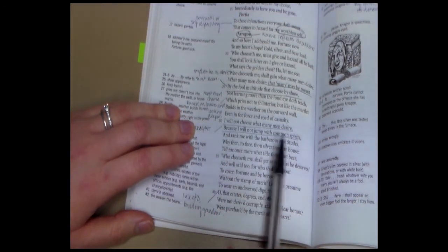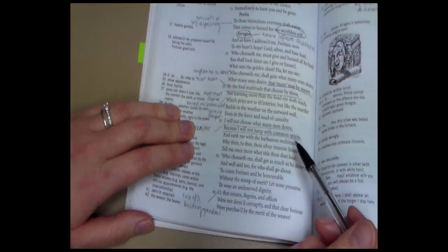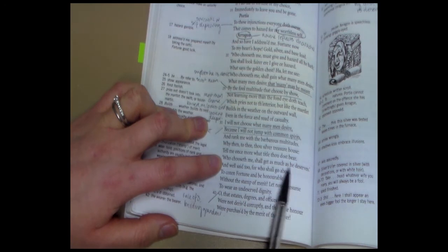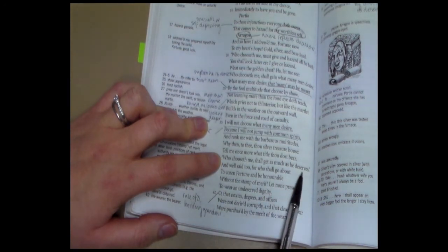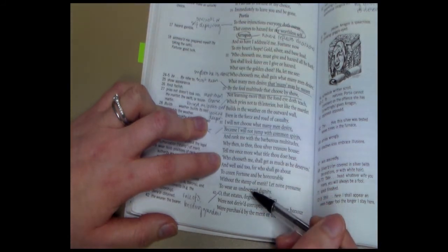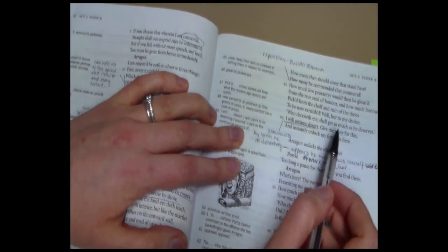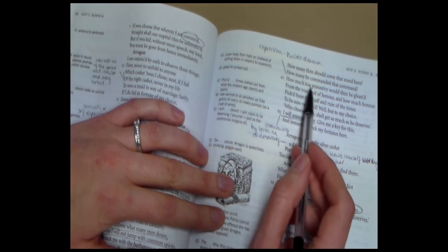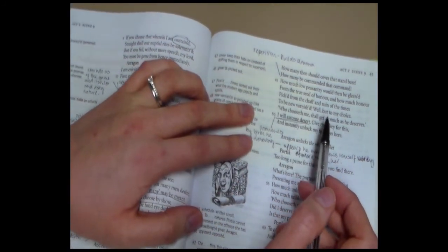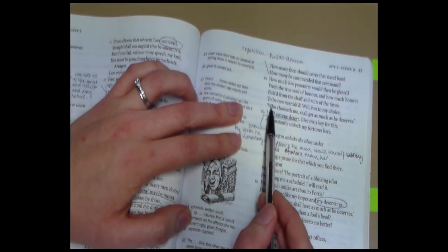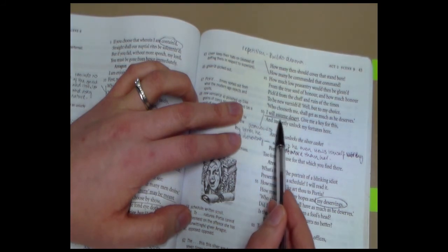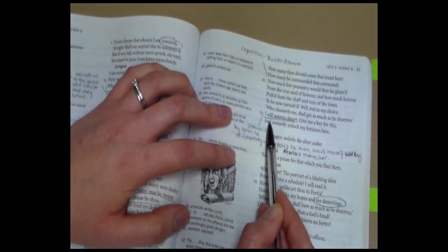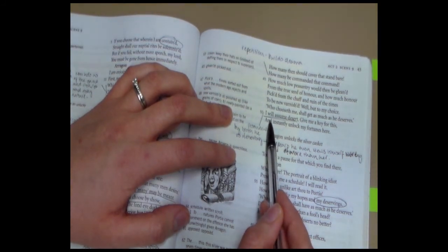He then goes on to discuss the next casket. So he goes on here to talk about who chooseth me shall get as much as he deserves. And we start to see the building of grandeur after this. Now, the repetition here, where he keeps talking about how many, how many, how much, again we're building the drama at the end of this speech. And he says, he repeats it again, who chooseth me shall get as much as he deserves. I will assume dessert. So he assumes in this moment that he has a birthright, that he is as good a man as could be, that he deserves this woman. And so he asks for the key to the silver chest.